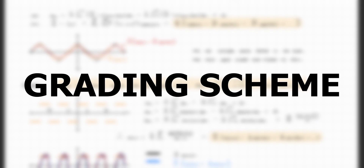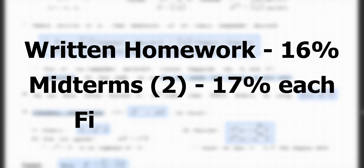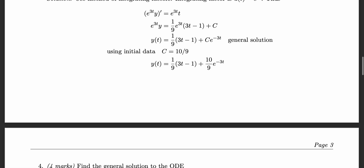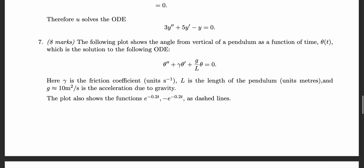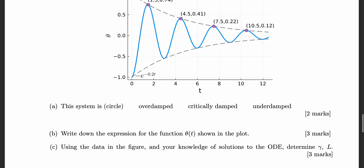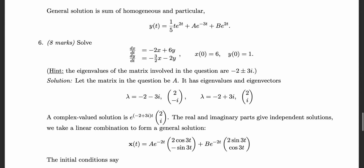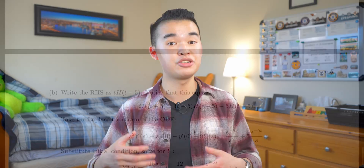In terms of the grading scheme for Math 256, it's really quite simple. Your homework assignments are weighted at 16%, your two midterm exams are weighted at 17% each, and your final exam is weighted at 50%. At the end of the term, your lowest homework assignment grade will be dropped. For Miranda's midterms, we had 50 minutes to write them, and they generally consisted of two to four multiple choice questions and four to six longer response questions where you need to show your work. For the final exam, we had two and a half hours, with 12 short answer questions worth one third of the total marks and six long answer questions worth two thirds of the marks.